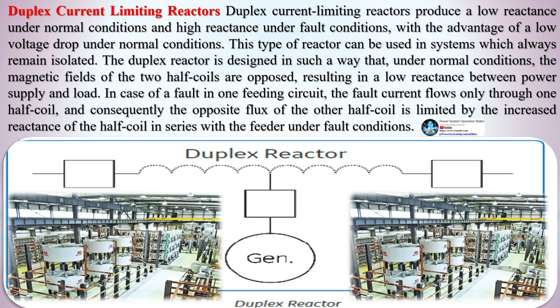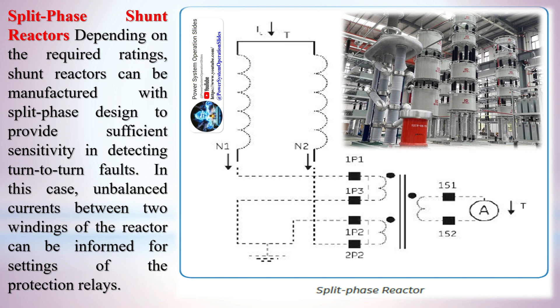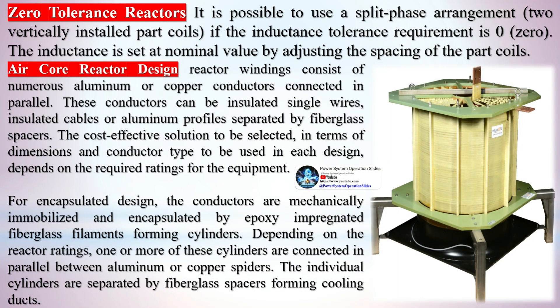Duplex current limiting reactors produce a low reactance under normal conditions and high reactance under fault conditions, with the advantage of a low voltage drop under normal conditions. This type of reactor can be used in systems which always remain isolated. Split-phase shunt reactors, depending on the required rating, can be manufactured with a split-phase design to provide sufficient sensitivity in detecting turn-to-turn faults. Unbalanced currents between the two windings can inform settings of protection relays. Zero tolerance reactors use a split-phase arrangement with vertically installed part coils when the inductance tolerance requirement is 0%, with inductance set at nominal value by adjusting the spacing of the part coils.